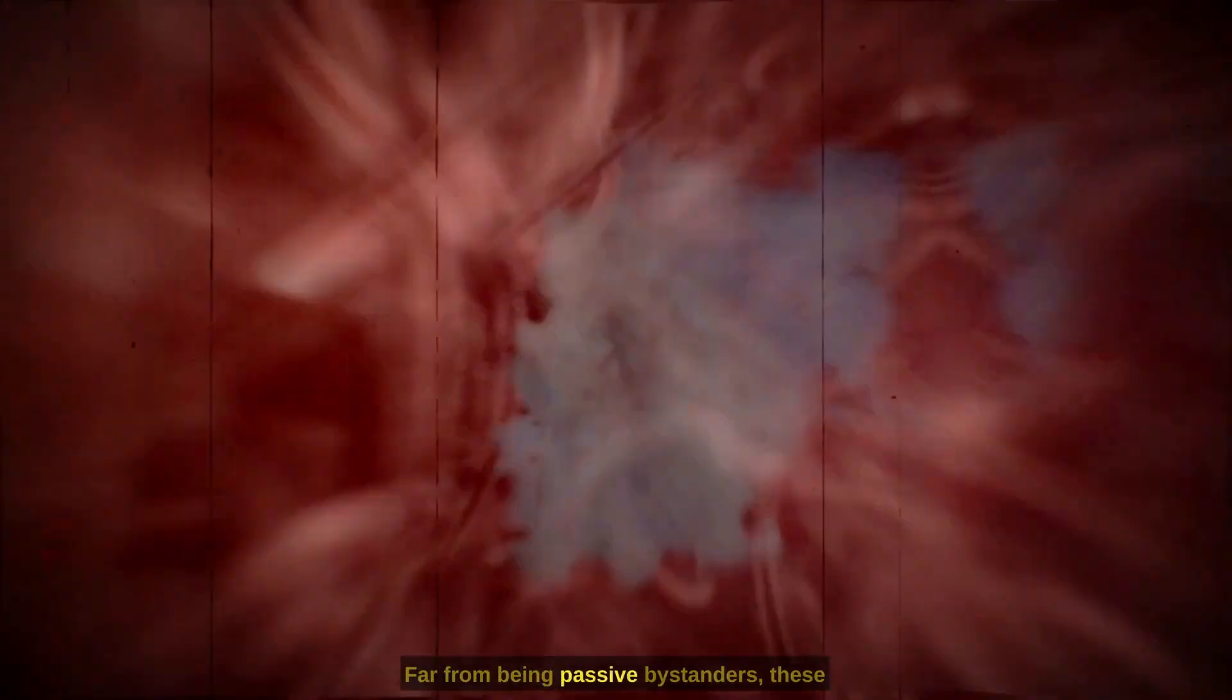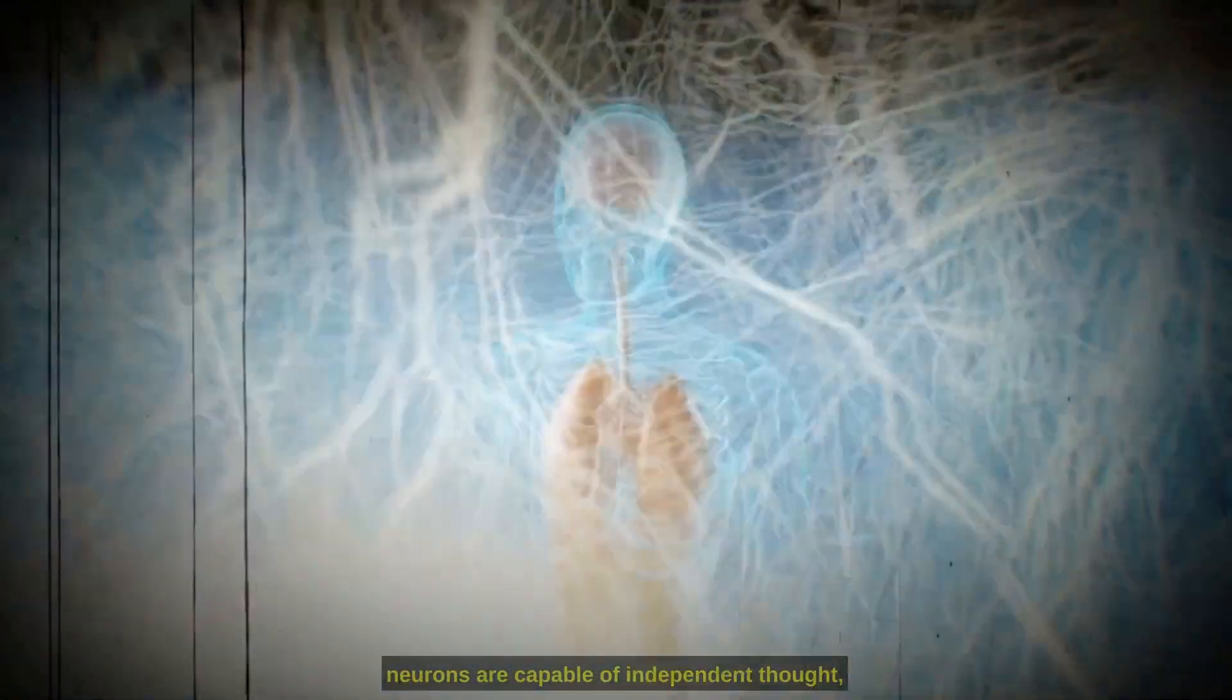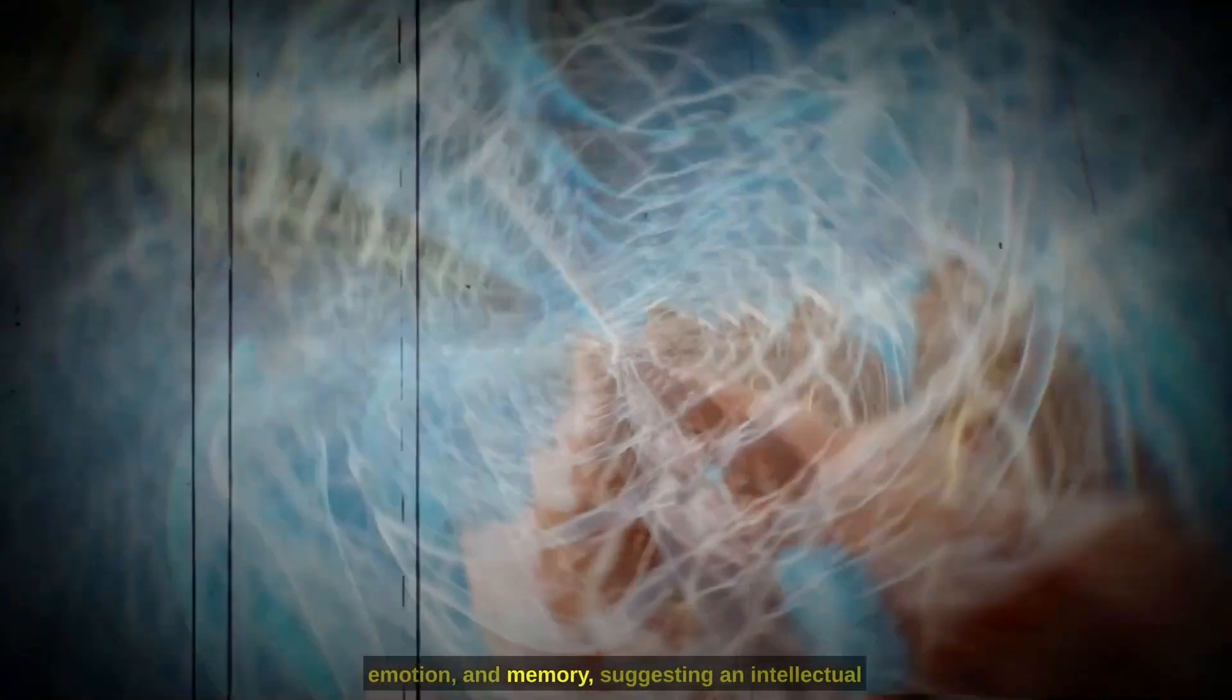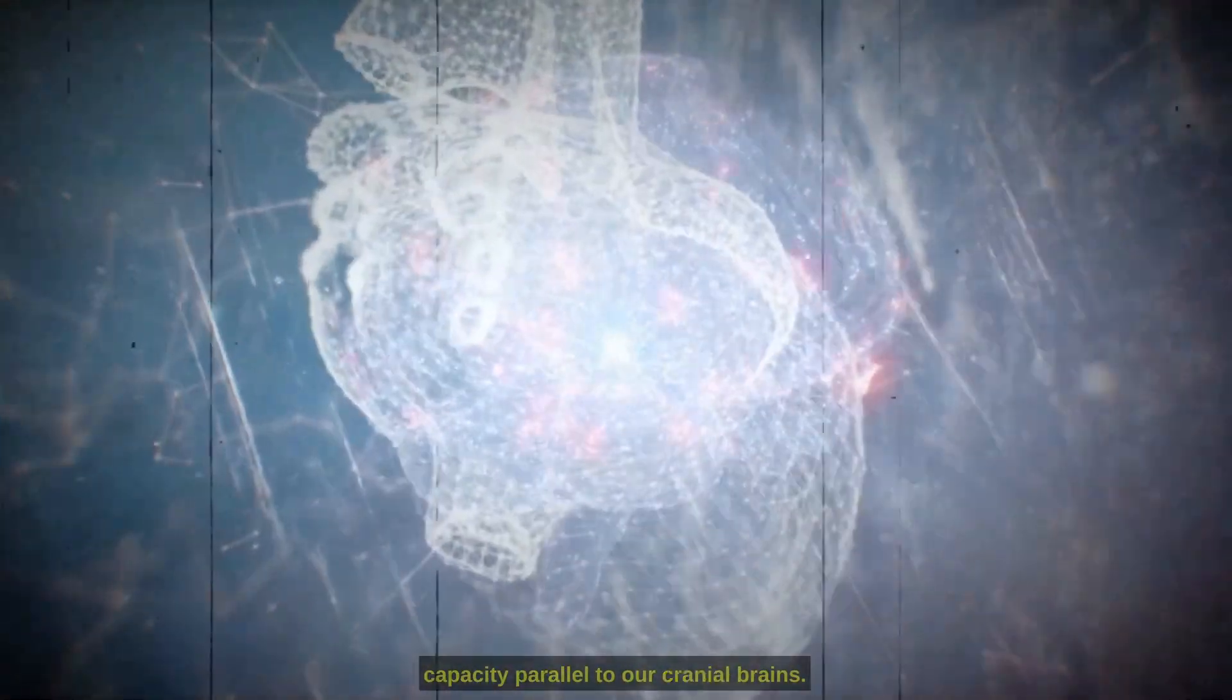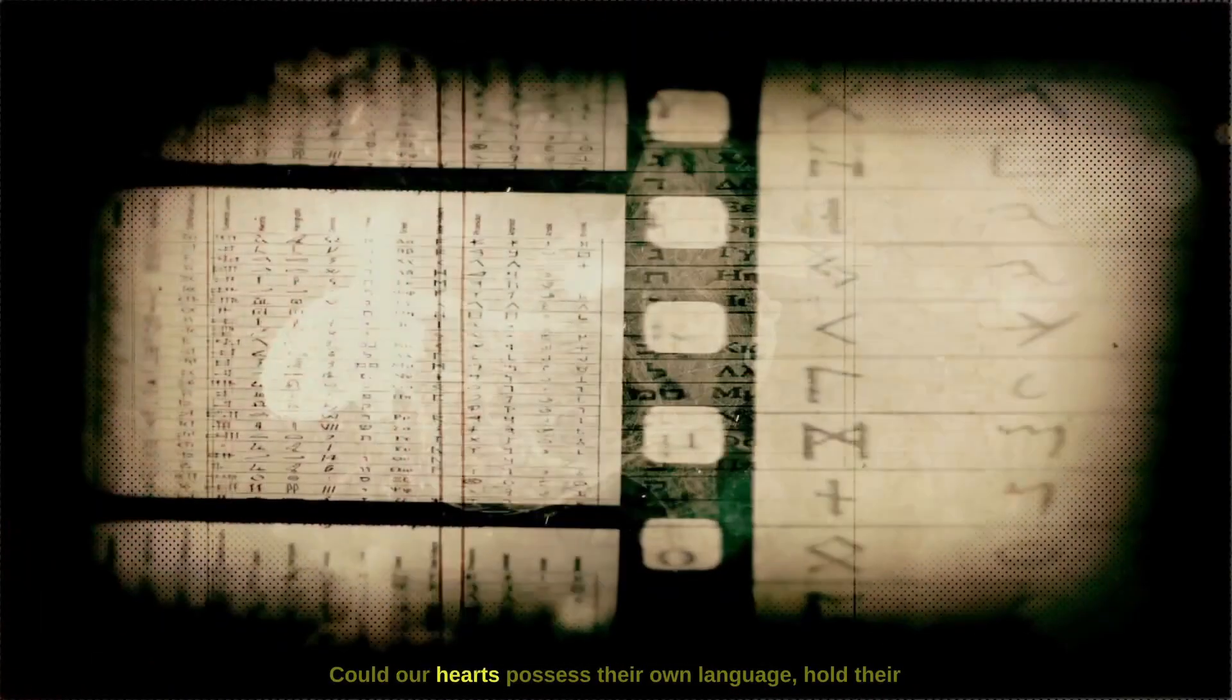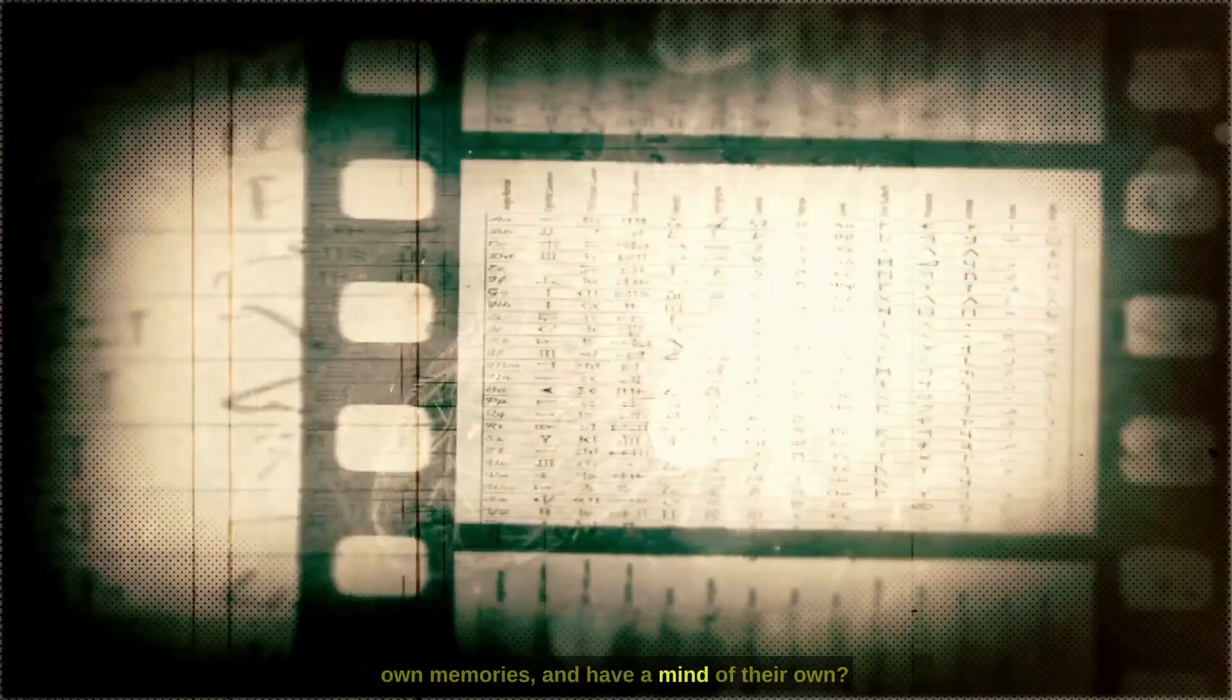Far from being passive bystanders, these neurons are capable of independent thought, emotion, and memory, suggesting an intellectual capacity parallel to our cranial brains. Could our hearts possess their own language, hold their own memories, and have a mind of their own?